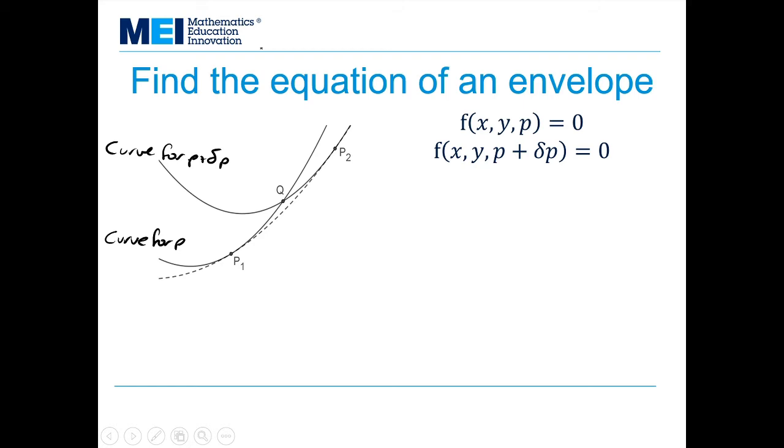Now, in order to use the technique that I want to use, I need to express my function with zero on the right-hand side. So f(x, y, p) = 0 and f(x, y, p + δp) = 0.